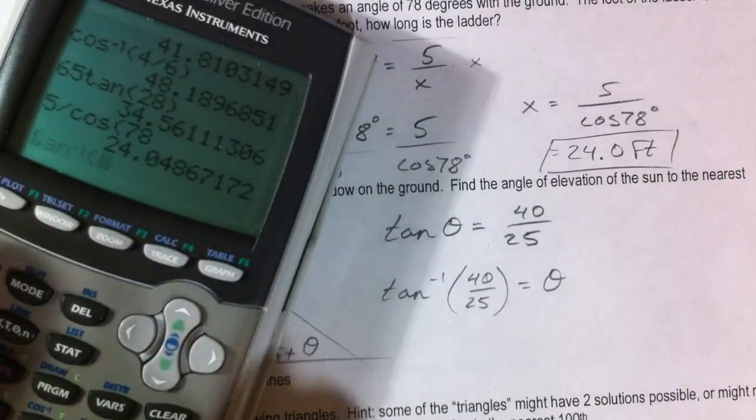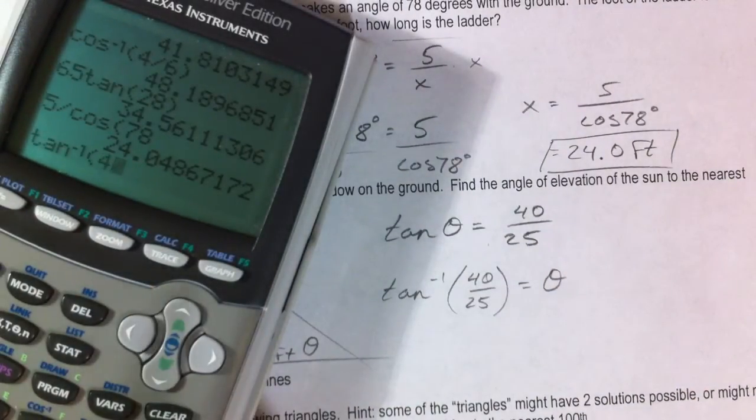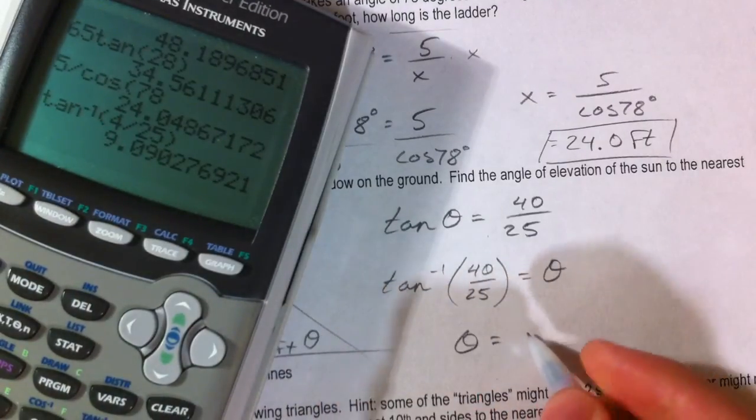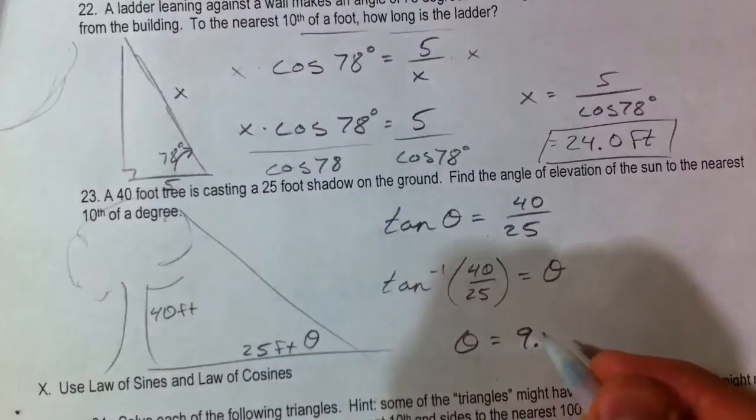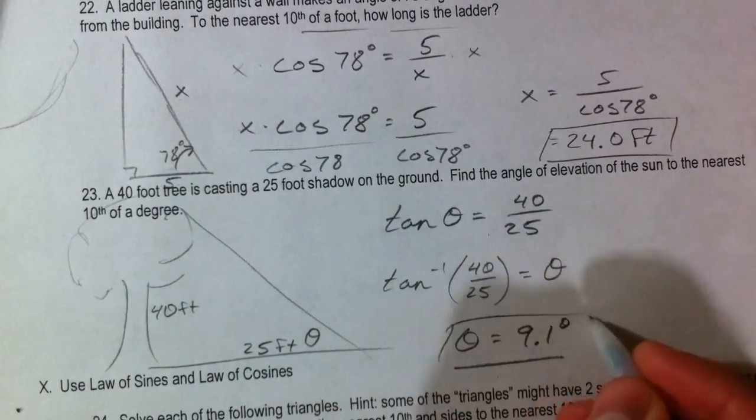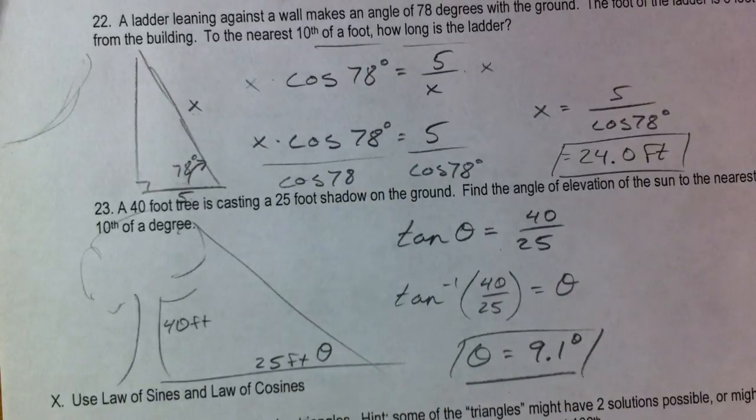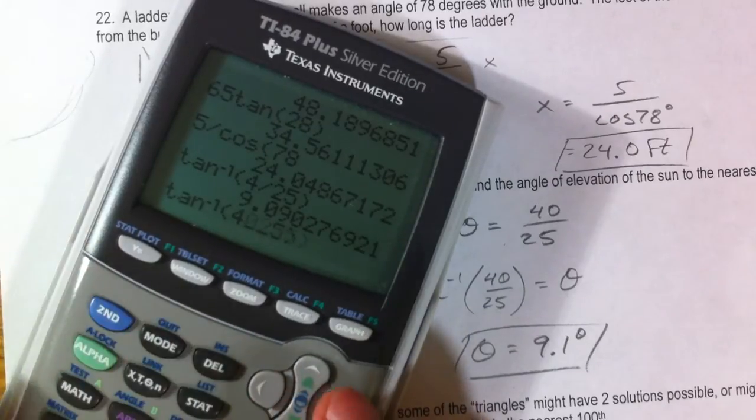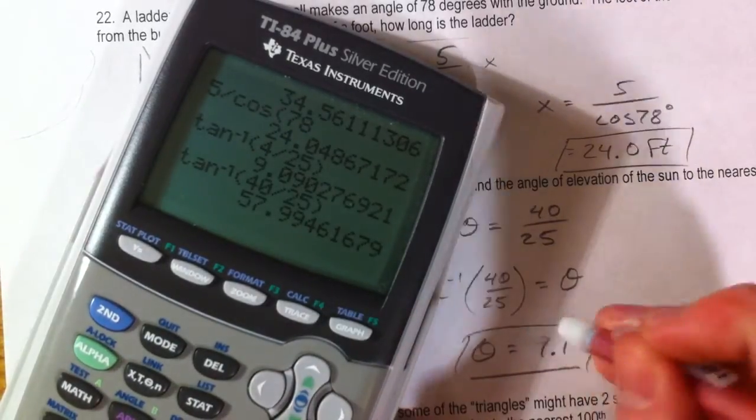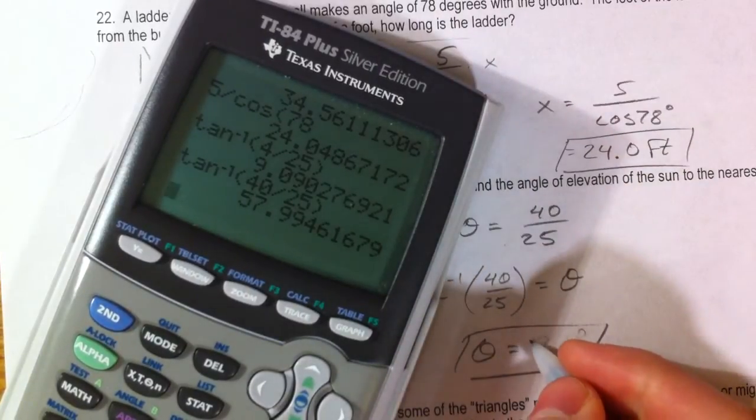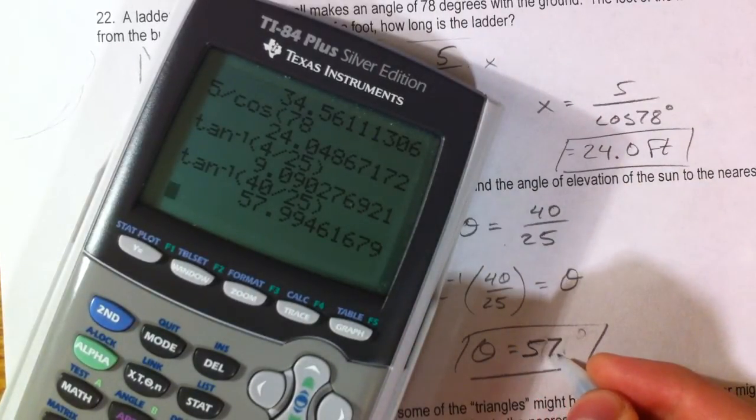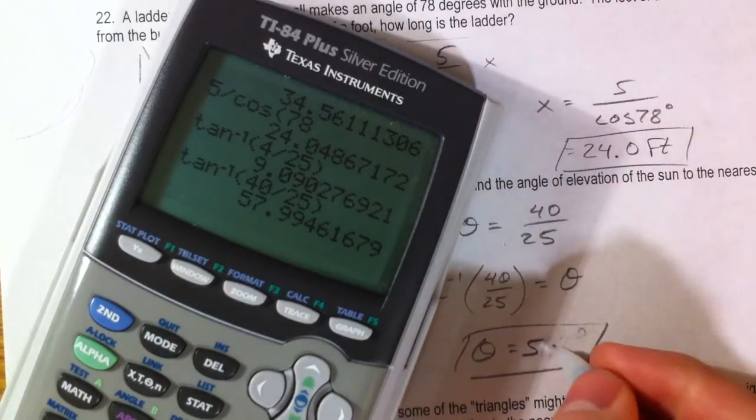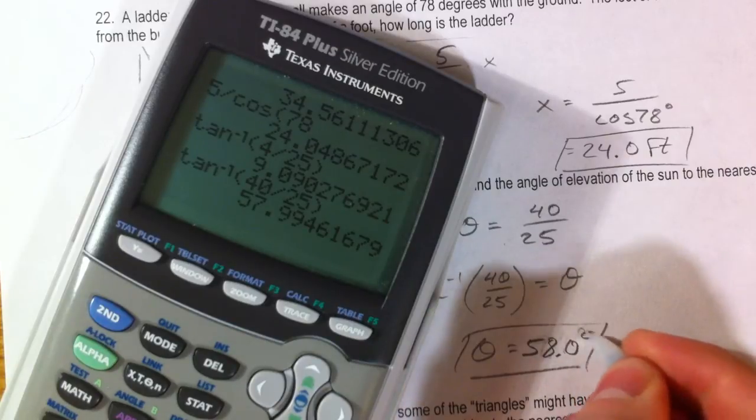So, inverse tangent, hit the second button first, and say your angle is 9.1 degrees. Sorry, that's not correct, I typed in 44. So, actually doing 40, we get a much better angle, which makes much more sense, 57.99. So to the nearest tenth, the 9 is going to round that up to 58.0 degrees.